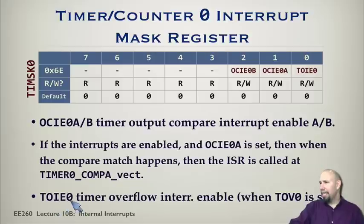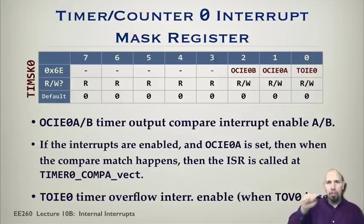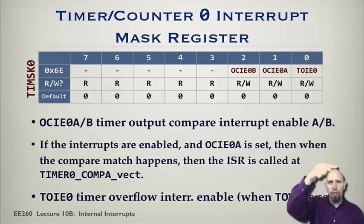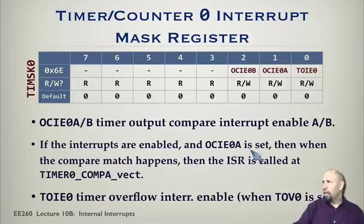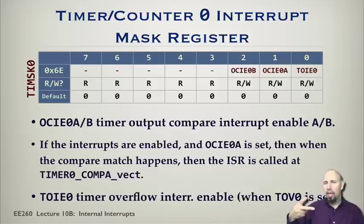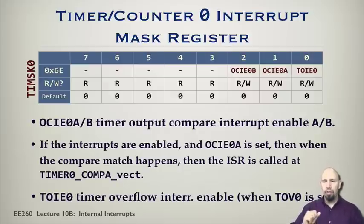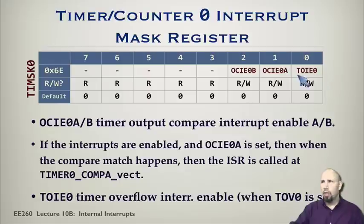The TOIE — timer overflow interrupt enable — allows an interrupt when the timer overflows. Notice there's no A or B channel here. The timer counts up from zero to the top and then overflows, causing it to drop back to the bottom. There is only one overflow per timer, even though timer zero has two compare registers giving two channels. We have separate timer mask registers for timers 1 and 2 as well.